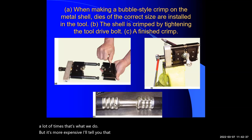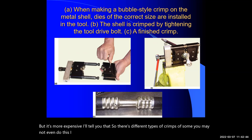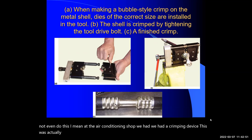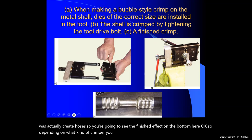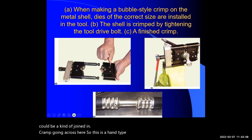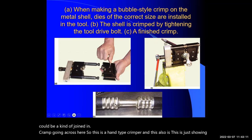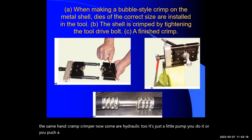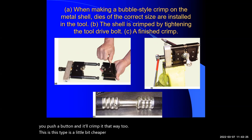There are different types of crimps for hose ends — at the air conditioning shop we had a crimping device to create hoses. Depending on what kind of crimper you have, it could be a straight crimp or a joined-in crimp across the fitting. This is a hand-type crimper. Some are hydraulic — you just push a button and it crimps that way too. The hydraulic type is a little more expensive but easier to use.